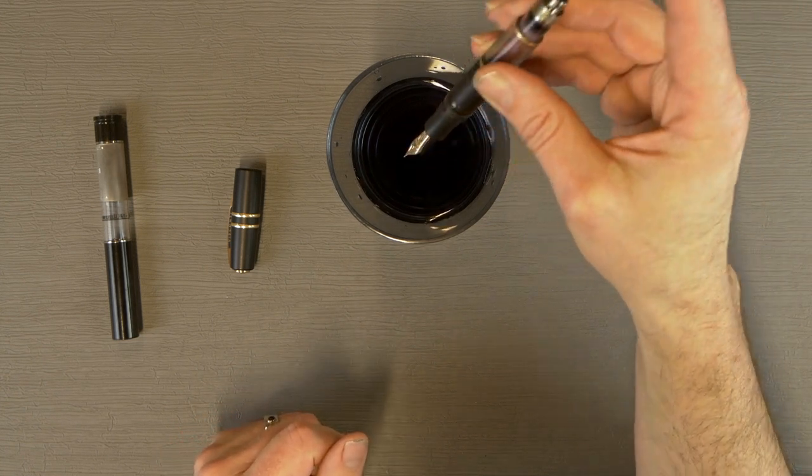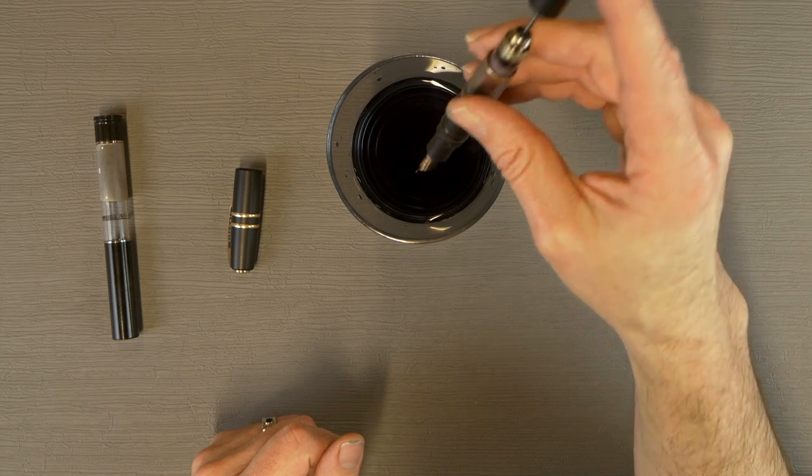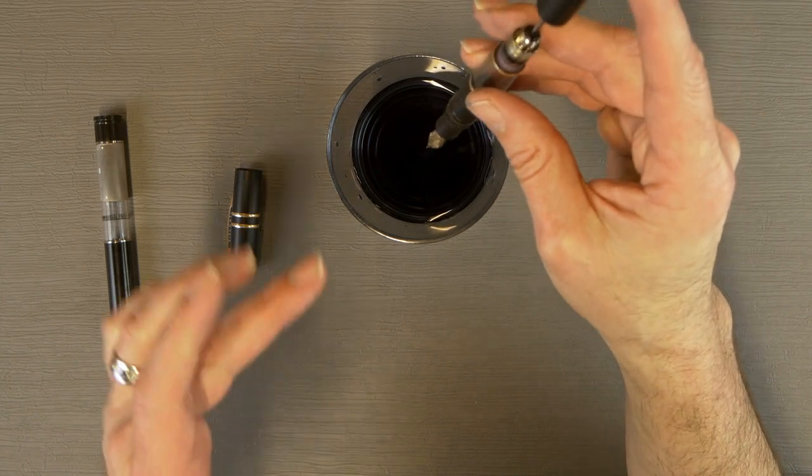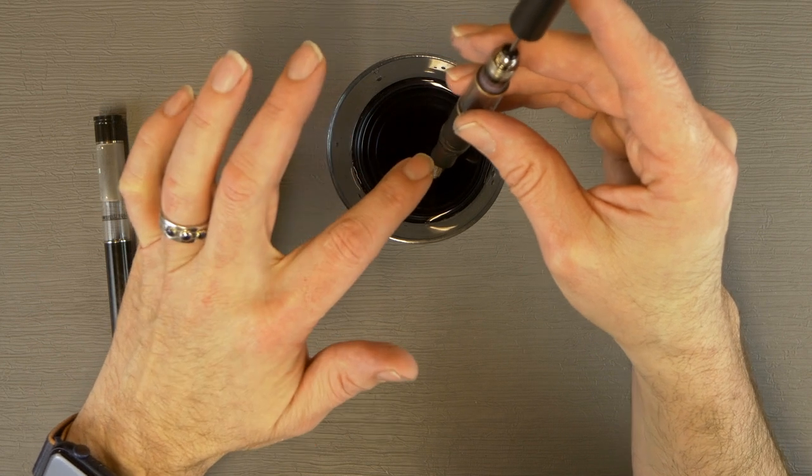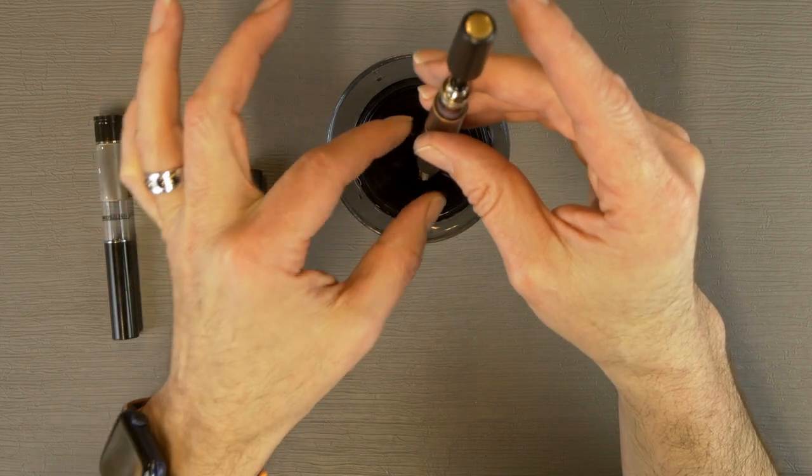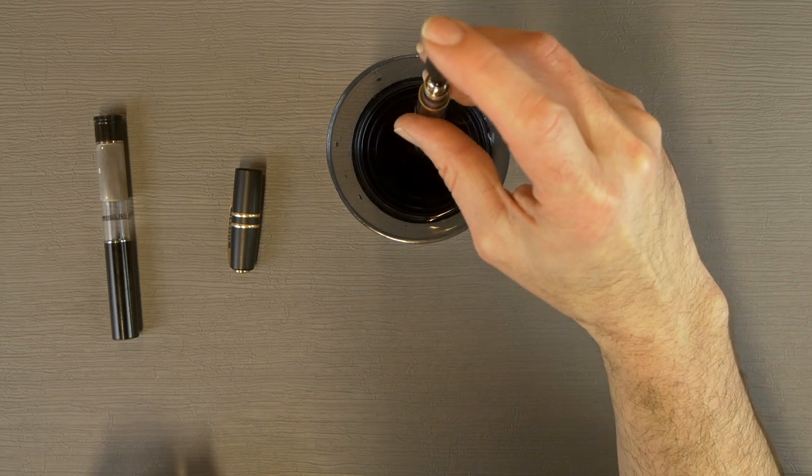Very much like the Vac 700R or the Pilot Custom 823, it fills on the downstroke. You want to put the nib into your bottle of ink up to and including part of the section. It needs to be completely submerged.